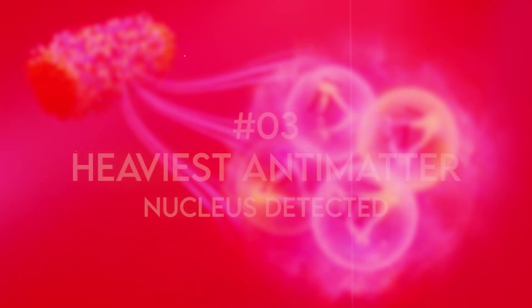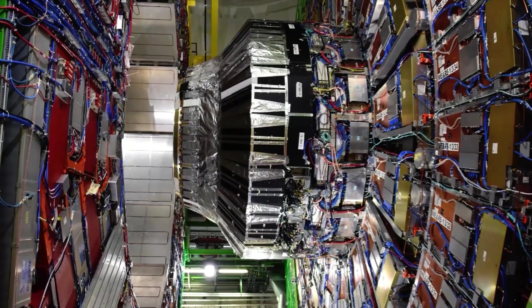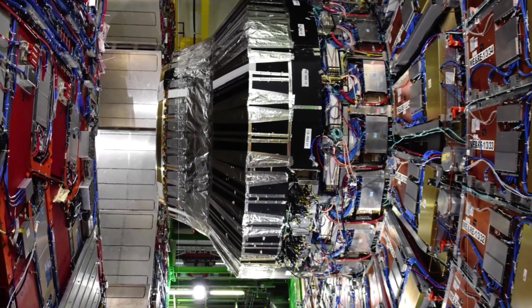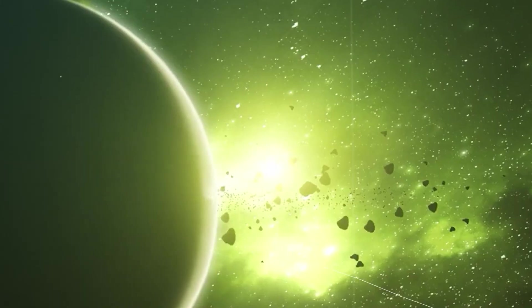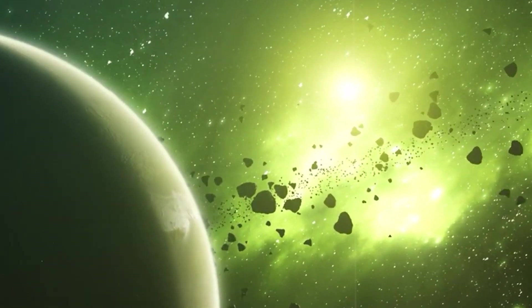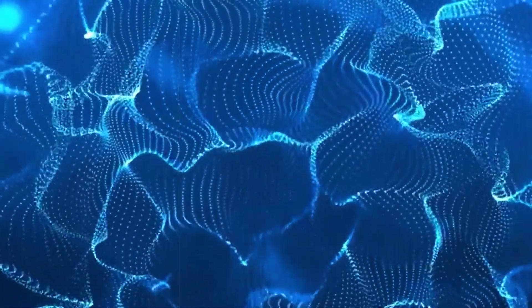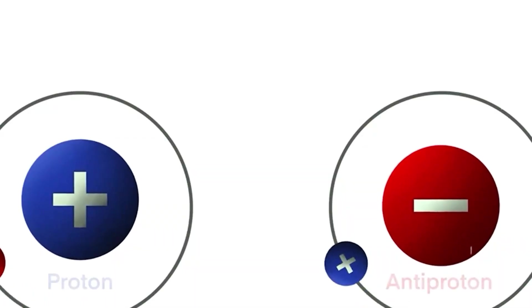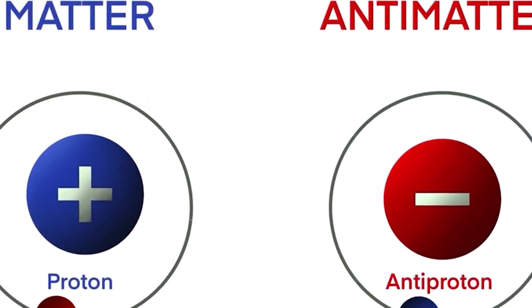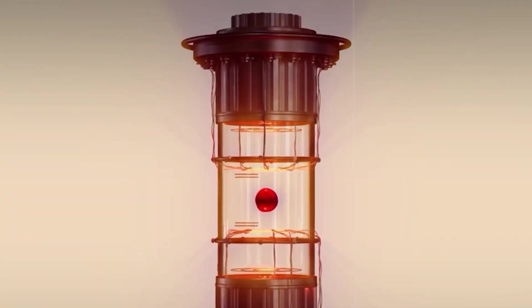Number 3. Heaviest antimatter nucleus detected. Scientists at Brookhaven National Laboratory have discovered the heaviest antimatter nucleus ever seen, marking a revolutionary step into the fundamental components of the universe. This is a window into the very fabric of reality, not simply particle physics. Researchers have been baffled by antimatter, the enigmatic mirror of conventional matter, for decades. And this discovery expands our understanding of the origins of the cosmos.